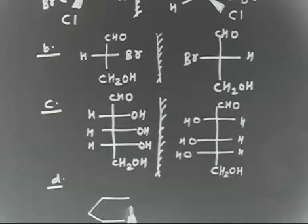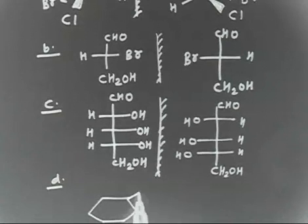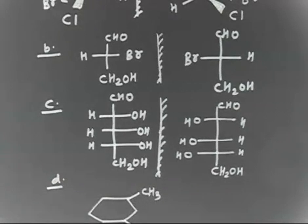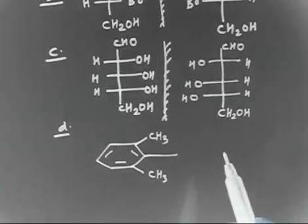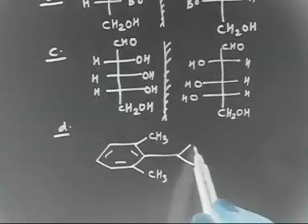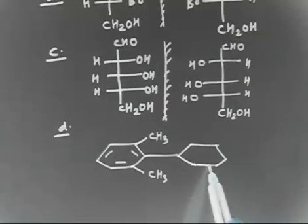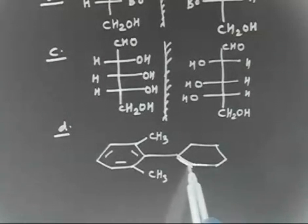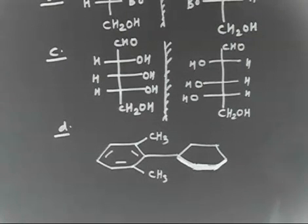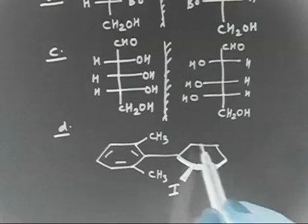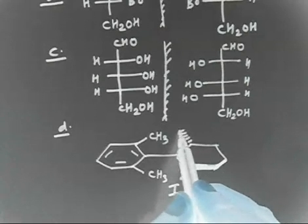Let us do molecule D. You have one benzene ring, and then you have another benzene ring, but this second benzene ring is not in the same plane. Some part is going inside and some solid lines show it coming outside. Here you have CH3 and CH3 — one going in and one coming out.